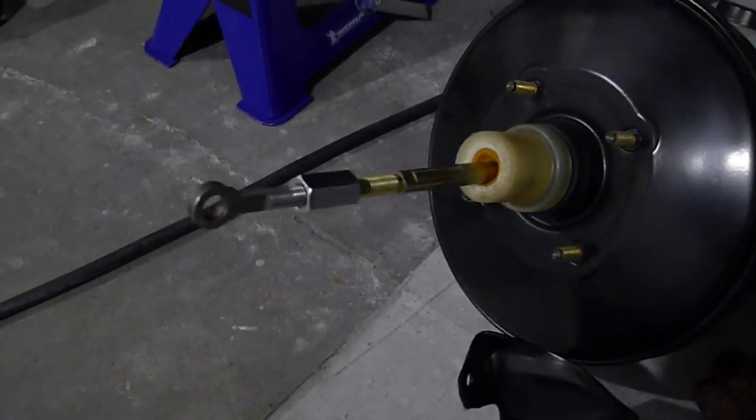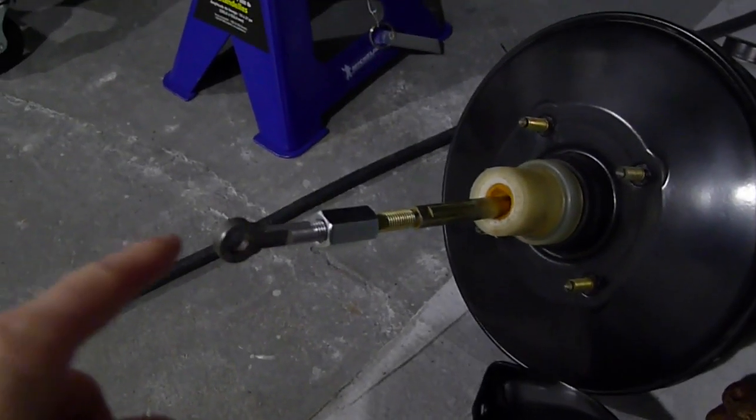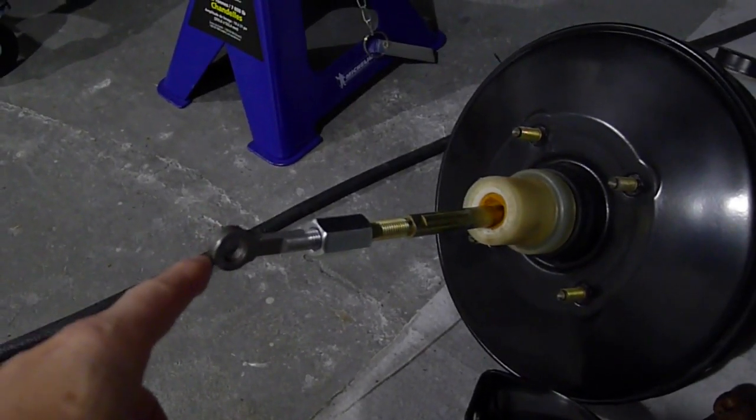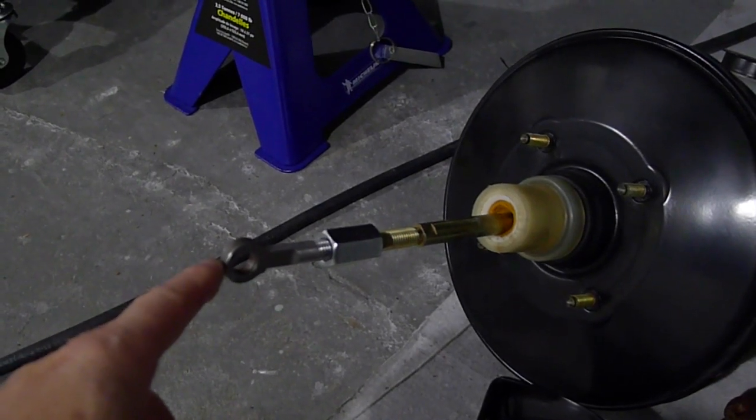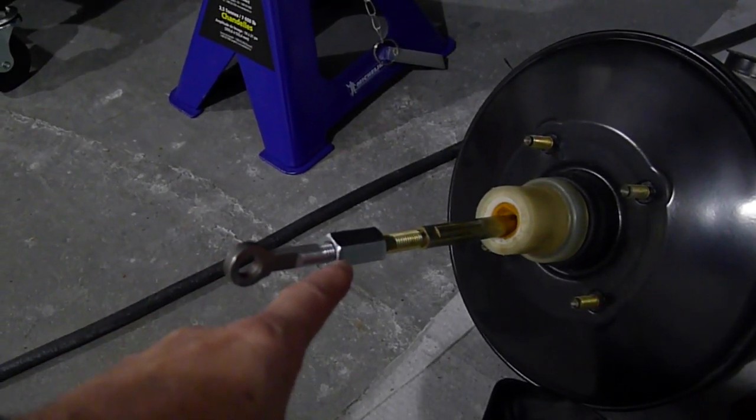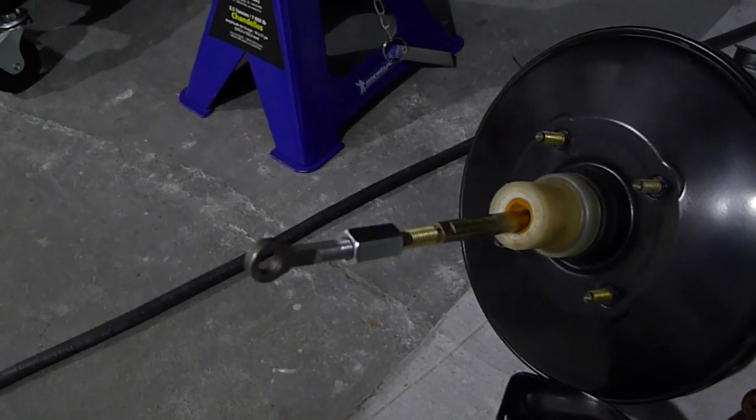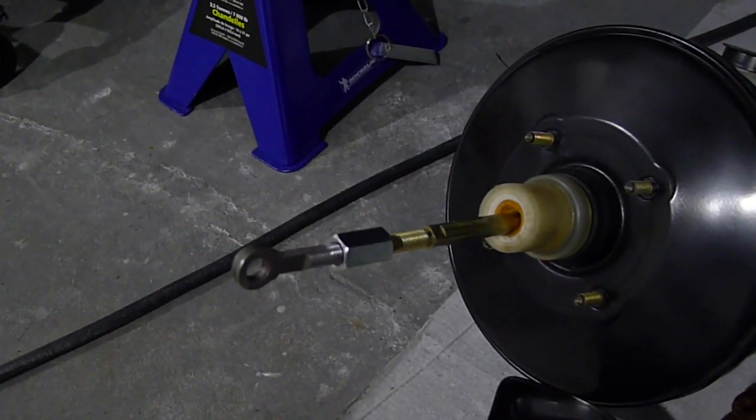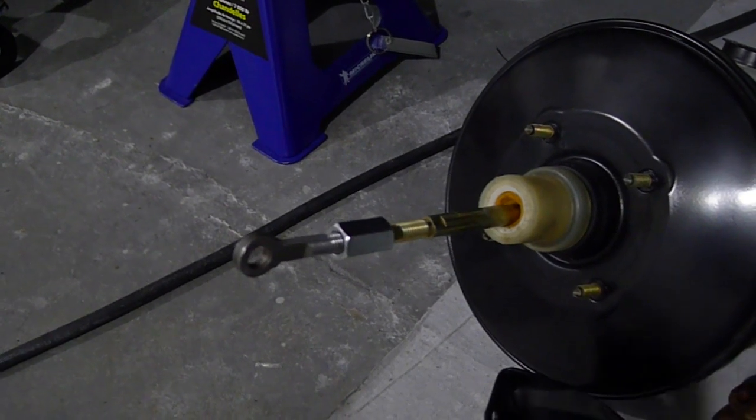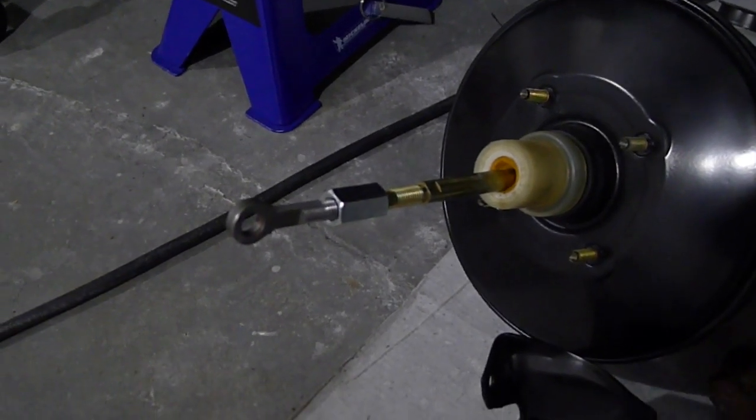So what I've done here is I've taken the old 83 GTI clevis from the old servo and I've cut it off, threaded it, kind of coupling that to the new one. And I'll adjust the length, it's longer than it needs to be right now, but I'll adjust the length once it's all installed and I can see where I want the pedal adjustment range to be.